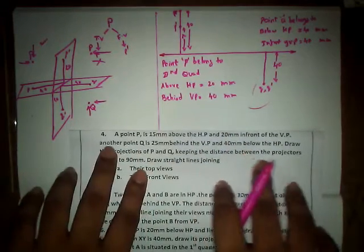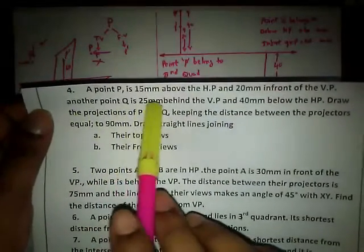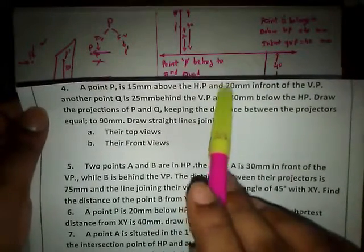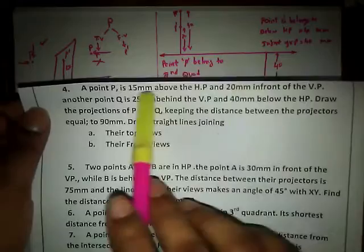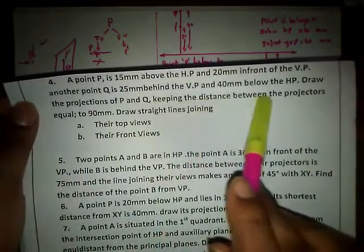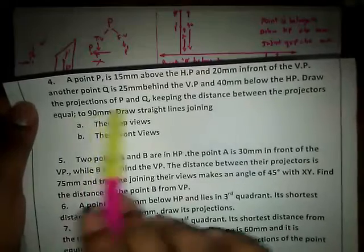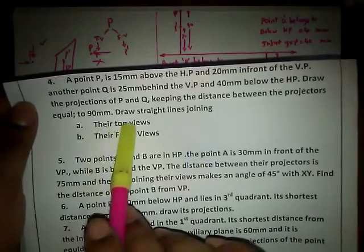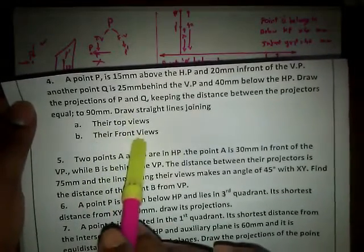According to this question, we have a point P that is 15mm above the HP and 20mm in front of VP, and another point Q that is 25mm behind the VP and 40mm below the HP. We have information about two points and we need to draw projector 1 of P and projector 2 of Q, then draw the projections of P and Q. We also need to draw straight lines joining the top views of P and Q and joining the front views of P and Q.